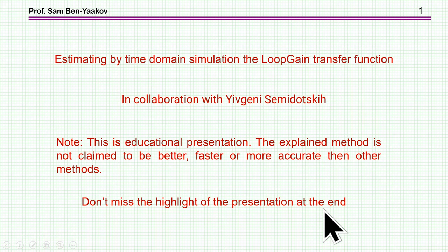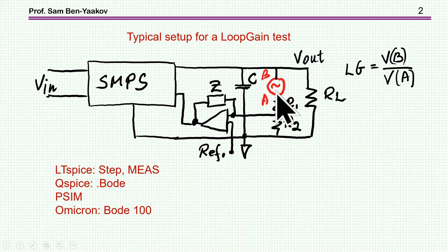Now, the conventional way to get the loop gain transfer function is to insert an excitation in the path of the feedback, and then to get the ratio between, say, in this case, B and A. The ratio of B and A is actually the transfer function of the loop gain in closed loop.